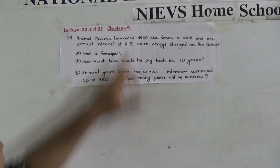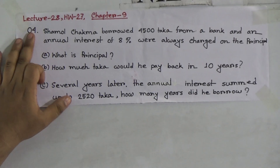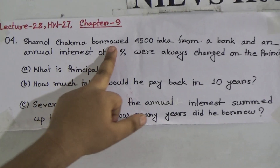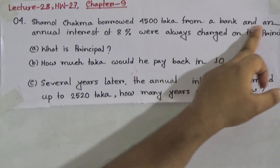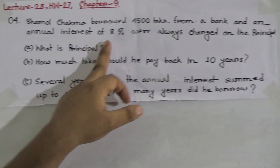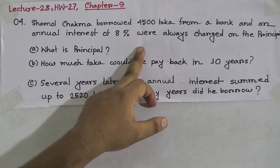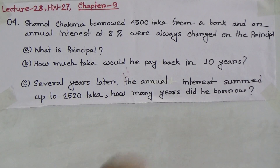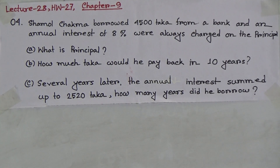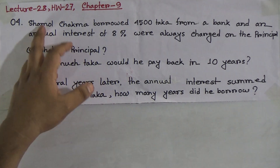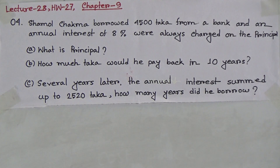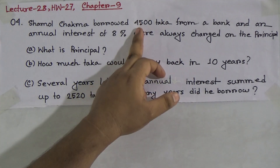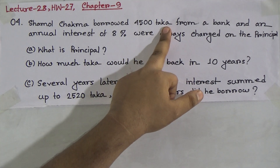Today's topic is chapter 9. At first we read the question. Notice chapter 9, question number 4. Shamul Chakma borrowed 4500 Dhaka from a bank and an annual interest of 8% was always charged on the principal. From the stem you notice, Shamul Chakma borrowed 4500 Dhaka. That means this amount is the principal — 4500 Dhaka is the principal here.